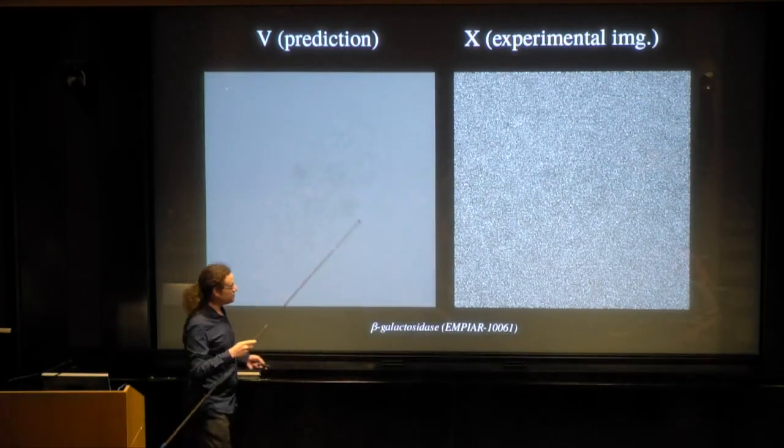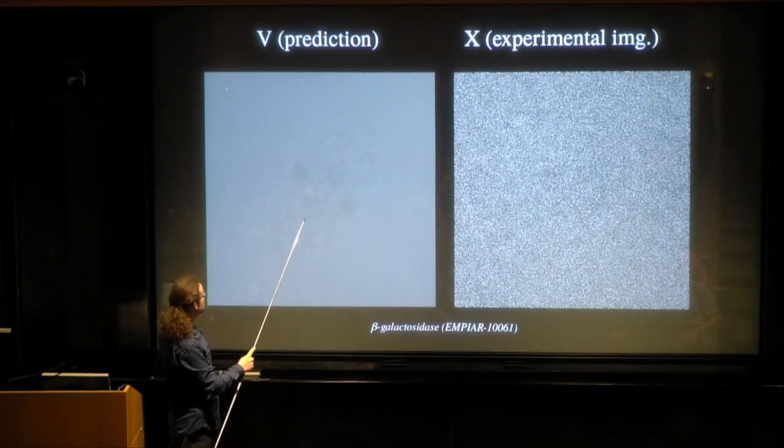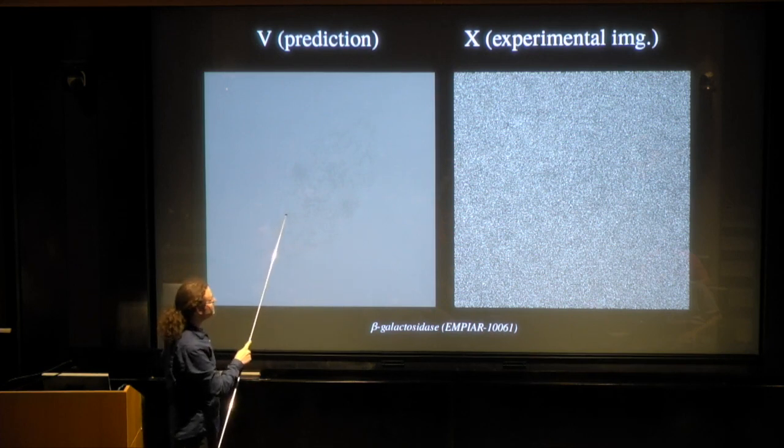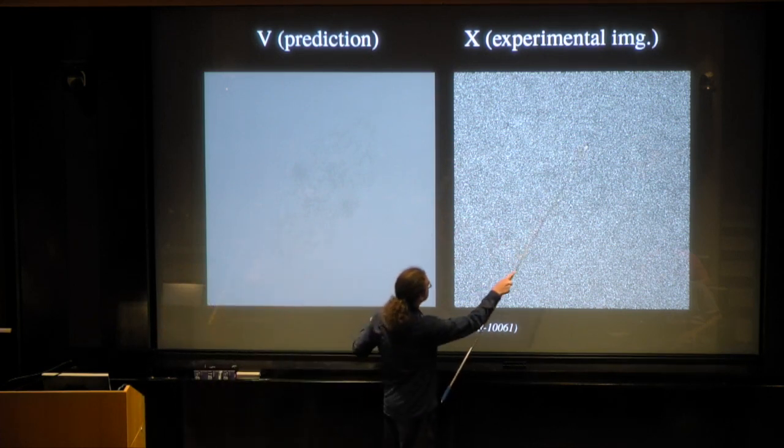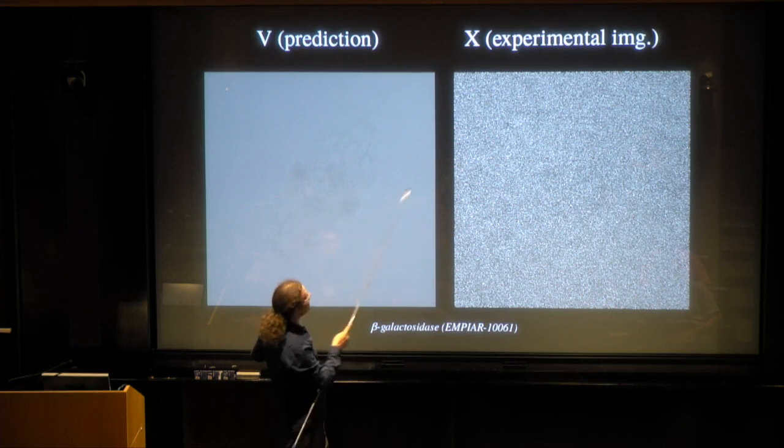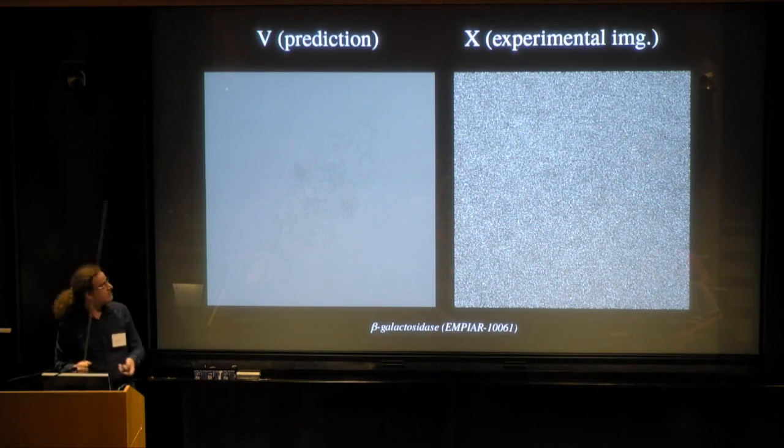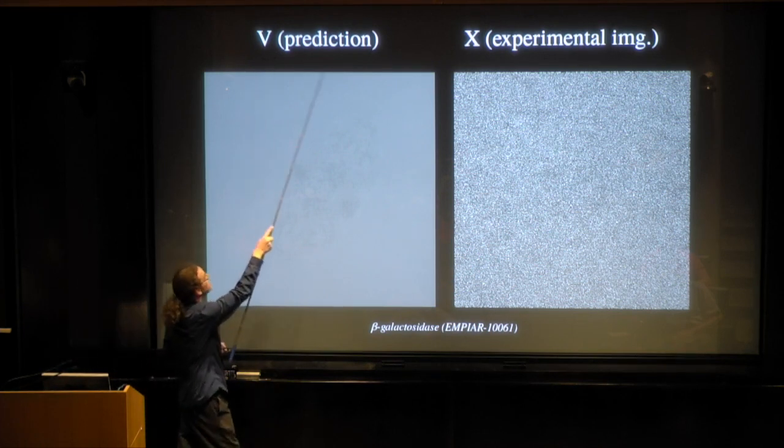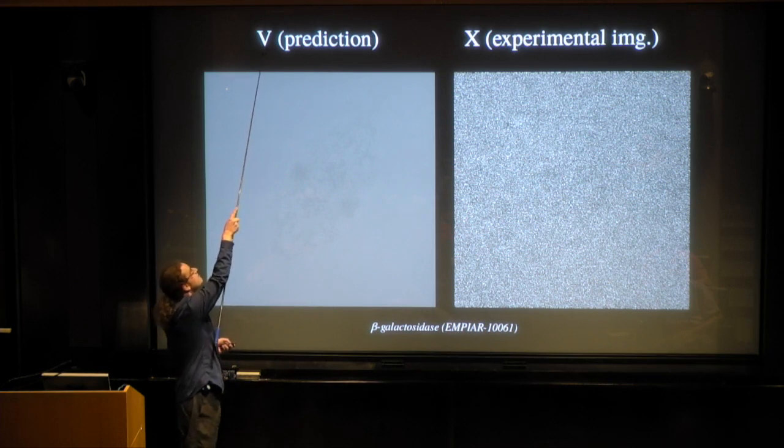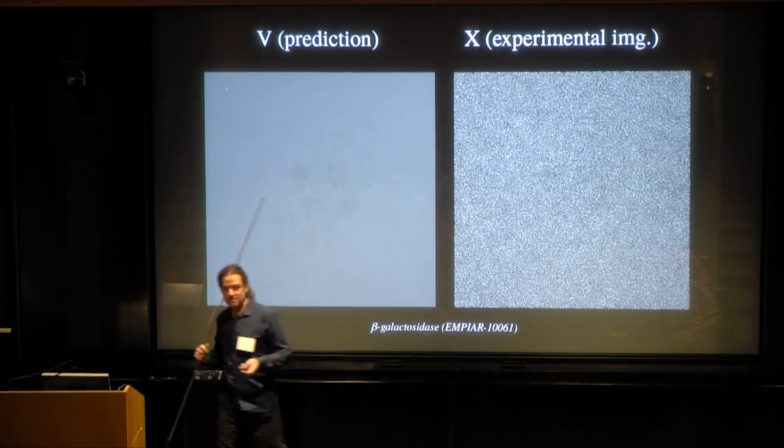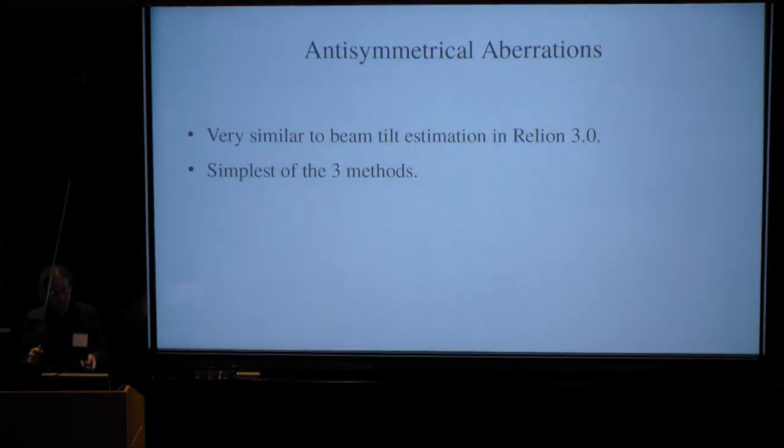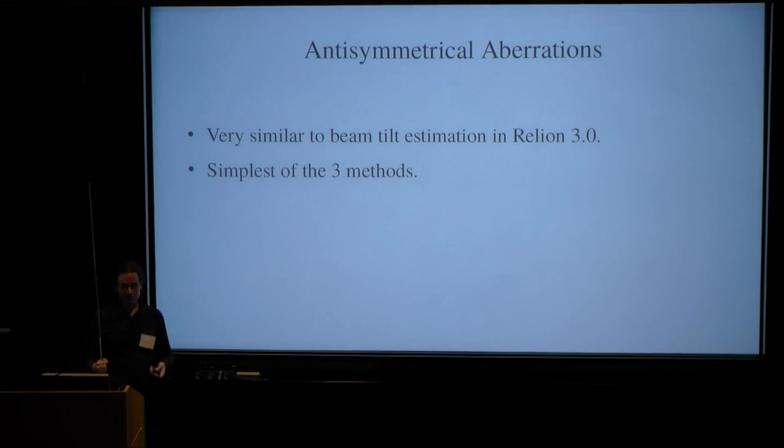Here's an example, to scale by the way, just to remind you. This is the signal that we predict, and that's supposed to be hidden in this noisy image here. So you see the two dark dots, if you look carefully. And remember the letters, I will always refer to the prediction as V and to the experimental image as X. So to come clean here, the anti-symmetric aberrations are essentially the same as the beam-tilt estimation in Relion 3.0, just with a different model. But it's the simplest of the three methods that we'll be talking about today. So I'll use this as an entry point.